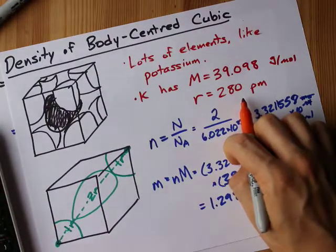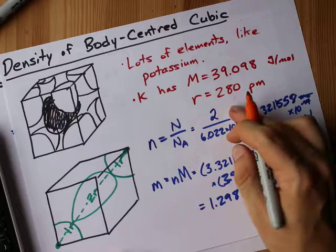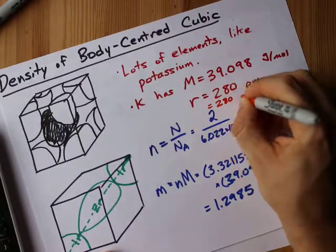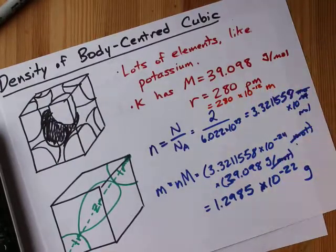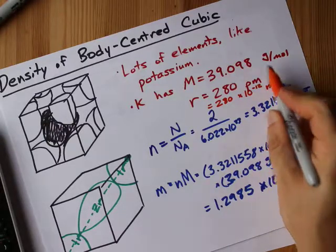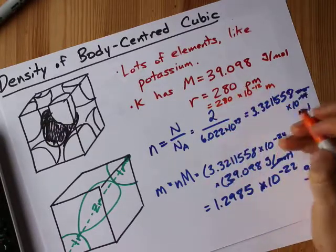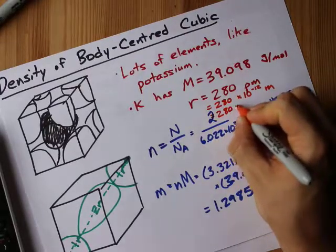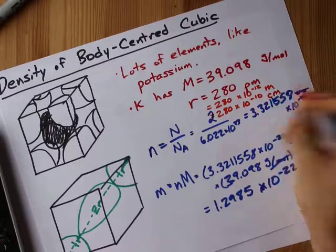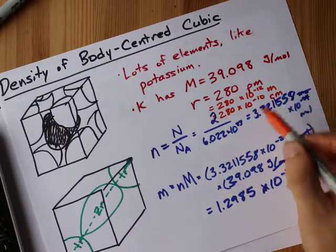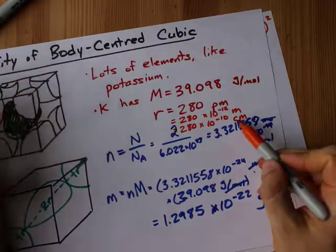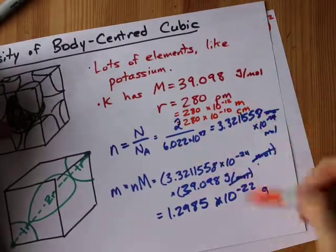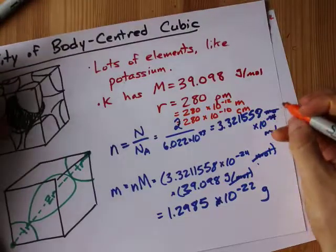The radius of a potassium atom, the van der Waals radius, is 280 picometers. What I like doing is converting pico into times 10 to the power of negative 12, because that's what pico means as a prefix, and then to convert meters to centimeters, I'm going to multiply this whole thing by 100. That's 280 times 10 to the negative 10 centimeters. The reason I like converting to centimeters is because density is almost always given as grams per centimeter cubed.